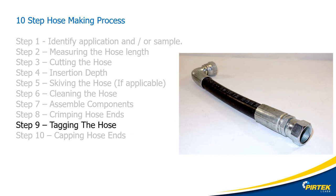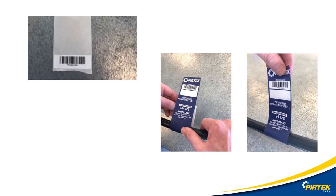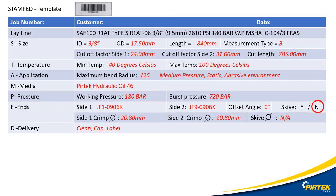Step nine: tagging the hose. On conclusion, hoses should be tagged and referenced. This information might be required for replacement hoses or for warranty claims. For future reference, I've included the label number on my stamped template.